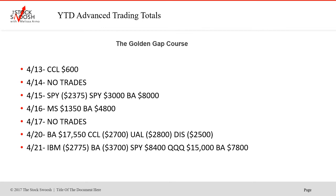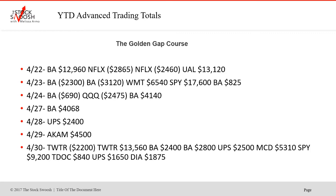CCL was a winner, no trades on the 14th, SPY lost, SPY won, BA winner, MS won on the 16th, BA won on the 16th — again BA. No trades on the 17th, another BA winner on the 20th, CCL lost, UAL lost, Disney lost. 21st, IBM lost, BA lost, SPY won, Qs won, BA won again on the 21st.